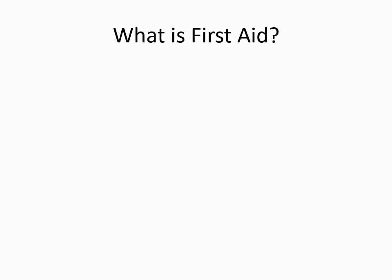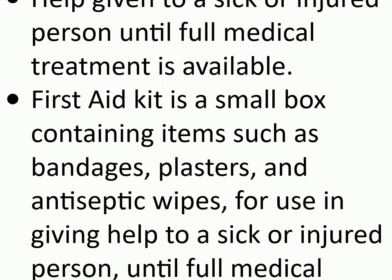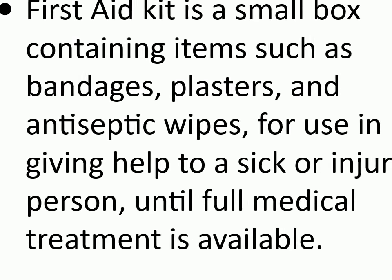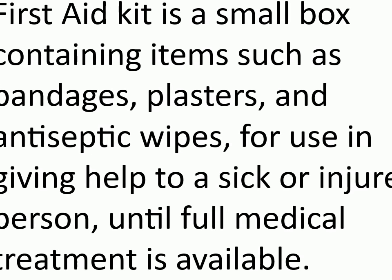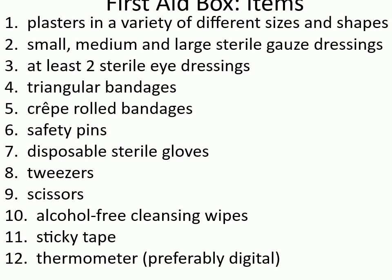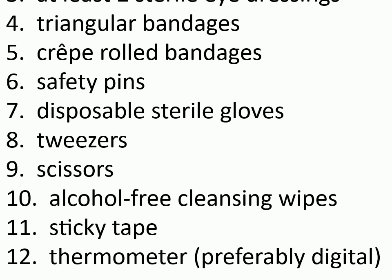What is first aid? Help given to a sick or injured person until full medical treatment is available. A first aid kit is a small box containing items such as bandages, plasters, and antiseptic wipes for use in giving help to a sick or injured person until full medical treatment is available. First aid box items include: plasters in a variety of sizes and shapes; small, medium, and large sterile gauze dressings; at least two sterile eye dressings; triangular bandages; crepe rolled bandages; safety pins; disposable sterile gloves; tweezers; scissors; alcohol-free cleansing wipes; sticky tape; thermometer (preferably digital).